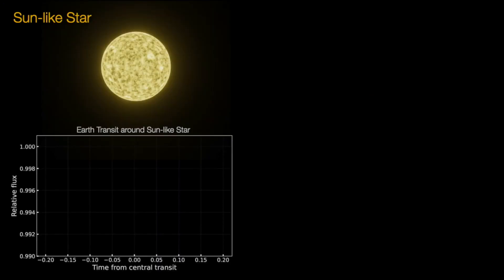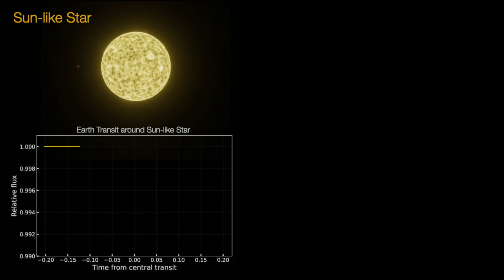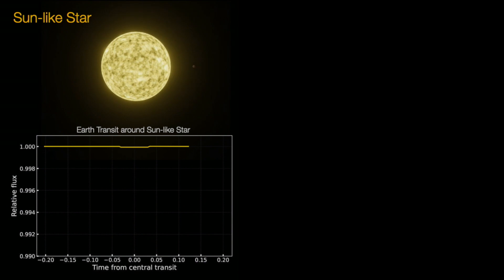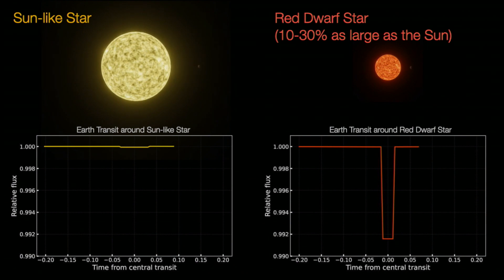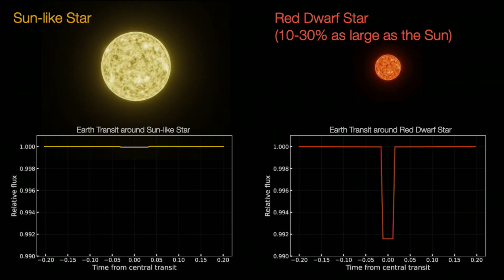As it turns out, the smaller the planet, the harder it is to find. So finding an Earth-like planet around a star as large as the sun poses an immense challenge. But we can help ourselves — we can cheat just a little bit by looking for those same Earth-sized planets around the smallest stars in the universe, so-called red dwarf stars. In that case, the dip in the light curve will be about a hundred times deeper, making our task just a little bit easier.